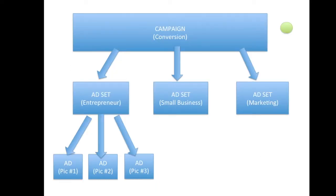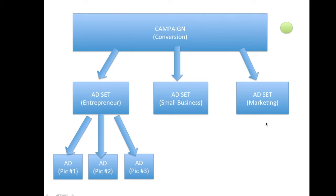Let me break this down with an example using a diagram I put together. Let's say your campaign objective is conversions — meaning you want leads and sales. That's the top of the pyramid. You can see a green icon indicating it's on, the same green icon you'll see in your Facebook Ads manager. For one campaign you can have multiple ad sets. In this example we have three ad sets, each with different targeting interests: entrepreneurs, small business, and marketing.